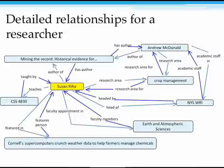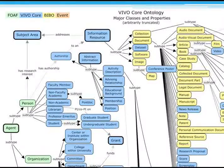Here's just an example. You can see the researcher Susan Riha with a bunch of relationships to news releases, to papers that she's authored, to areas she works in. This is the kind of information that we maintain about our researcher or faculty member in the system. Here is a small subset of the VIVO ontology. We have a much higher level of detail and granularity in the descriptions we're providing for people and the relationships we're establishing.